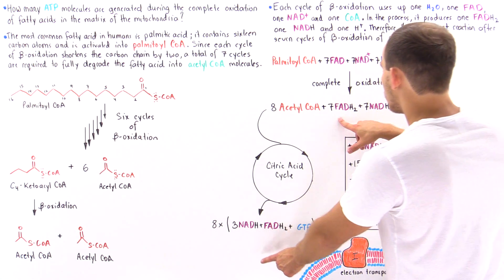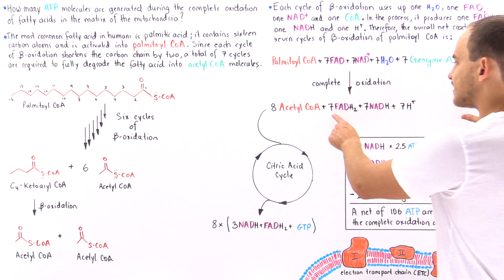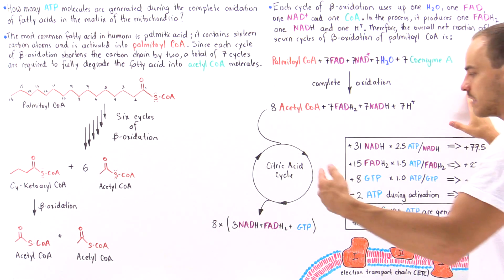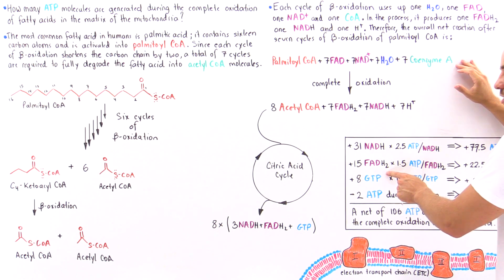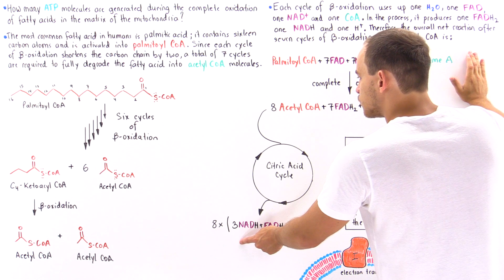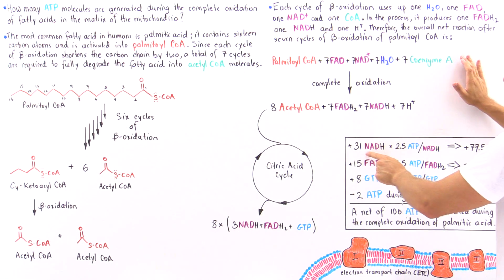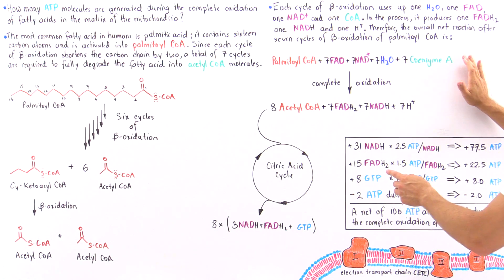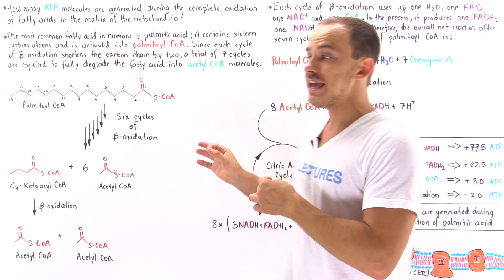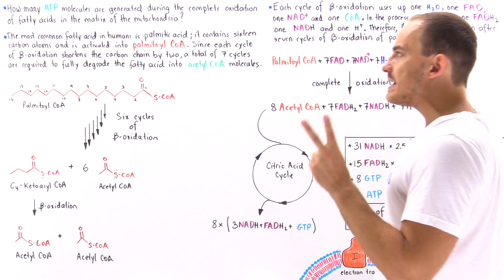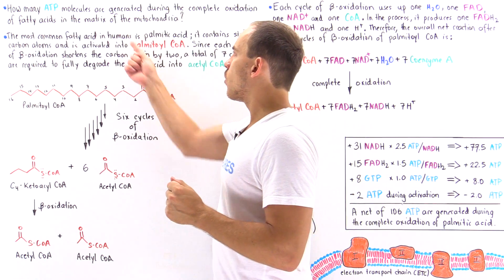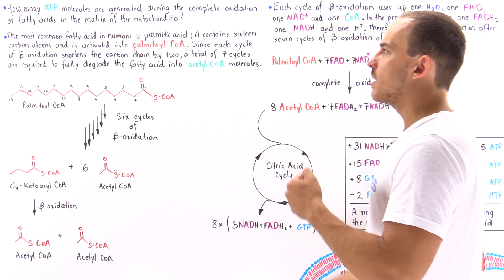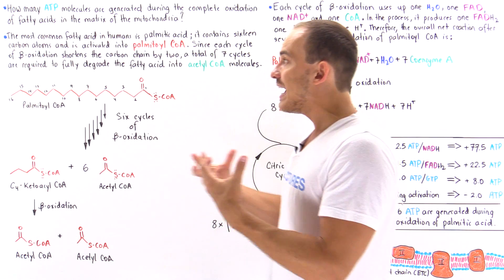Tallying all molecules: from beta oxidation we have 7 FADH2, and from the citric acid cycle 8 FADH2, giving 15 FADH2 total. For NADH, 24 from the citric acid cycle plus 7 from beta oxidation gives 31 NADH total. We also have 8 GTP molecules. Importantly, recall that 2 ATP molecules are used up when we activate palmitic acid into palmitoyl coenzyme A, so we must subtract 2 ATP from our final total.